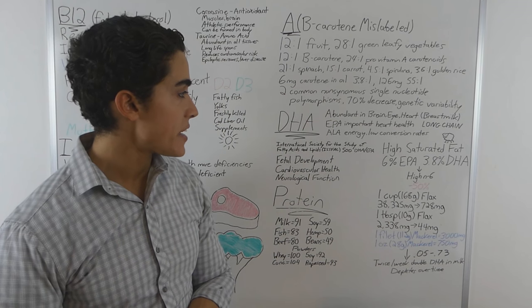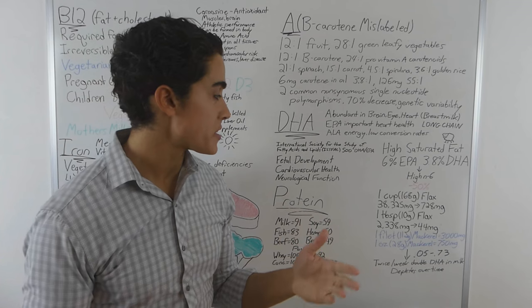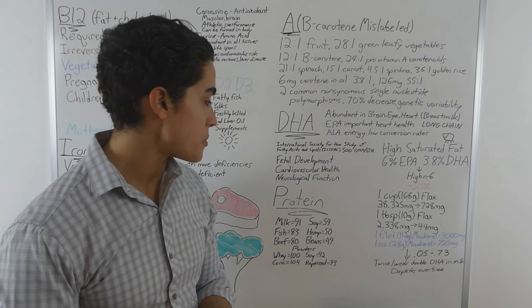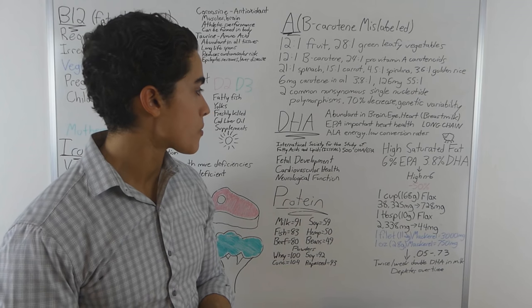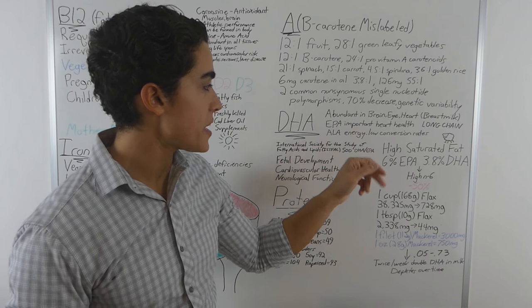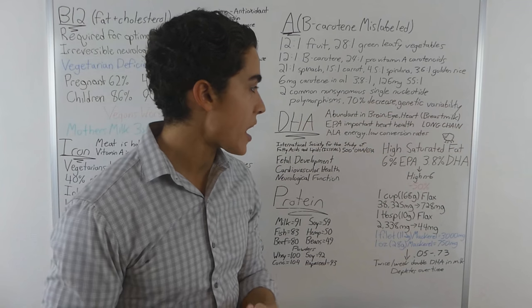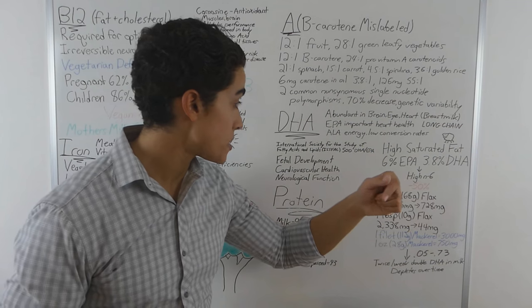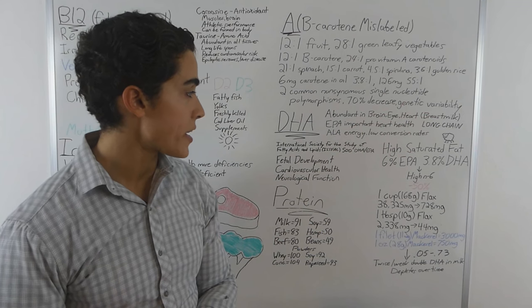DHA, the importance, I think everyone kind of agrees. Cognitive function, development of babies, cardiovascular health. DHA being a long-chain fatty acid as well as EPA. Abundant in brain, eye, heart, tissue as well as breast milk. EPA being important in heart health.